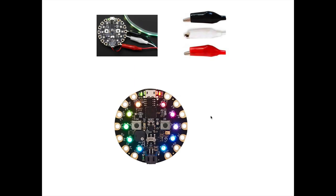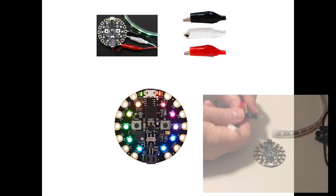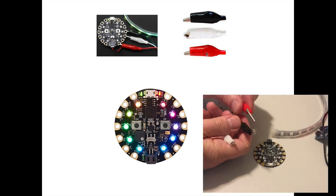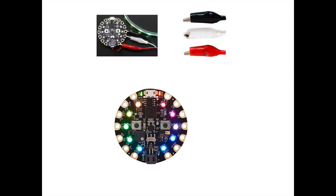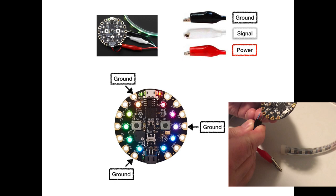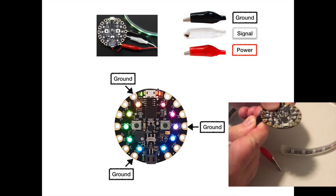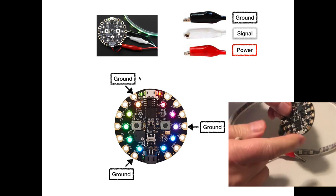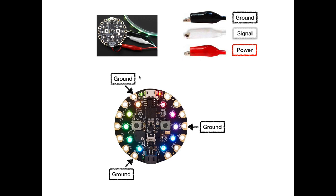If you take a look at the end of your NeoPixel strips, you're going to see three alligator clips. They're black, white, and red, and that stands for ground, signal, and power. The ground can plug into any of the three pins that are labeled GND. To think about ground, think about rich soil being black — the ground line is black.